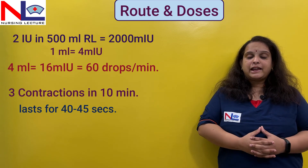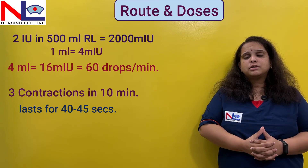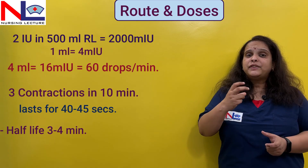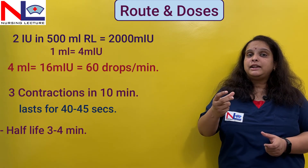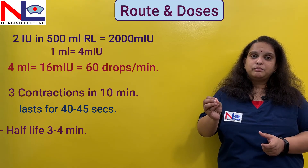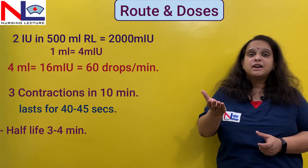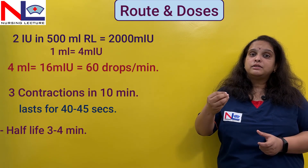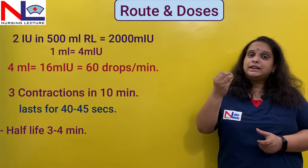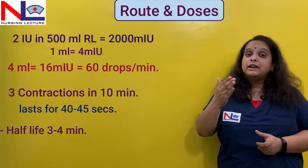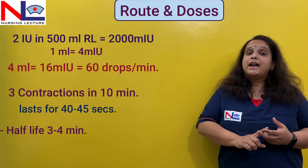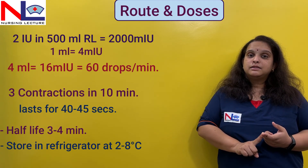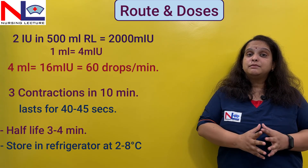The half-life of oxytocin is approximately 3 to 4 minutes, meaning if the infusion is stopped its effect is reduced to half within that time. Therefore, to maintain the goal of 3 contractions in 10 minutes, continuous infusion is necessary. For effective results, oxytocin must be refrigerated at 2 to 8 degrees Celsius.